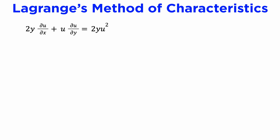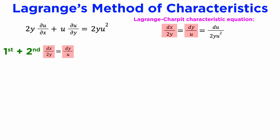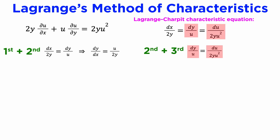Let's see an example. Suppose we want to solve the PDE 2y ∂u/∂x plus u ∂u/∂y equals 2yu². This is quasi-linear and first order, so we can write down our characteristic equation dx/2y equals dy/u equals du/2yu². Taking the first and second terms gives us the ODE dy/dx equals u/2y. Taking the second and third terms gives us the ODE du/dy equals 2yu.